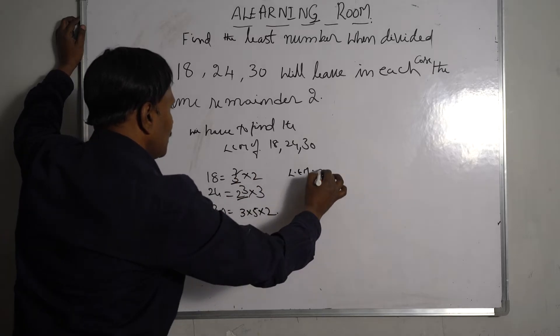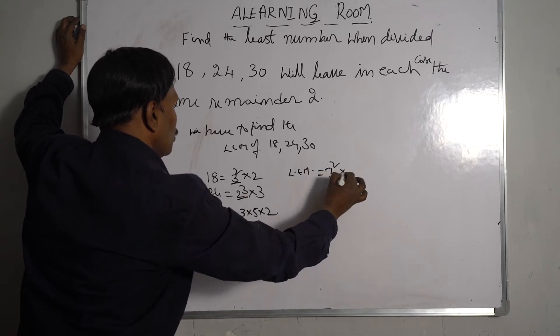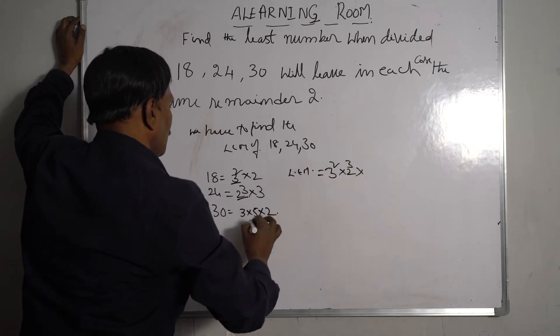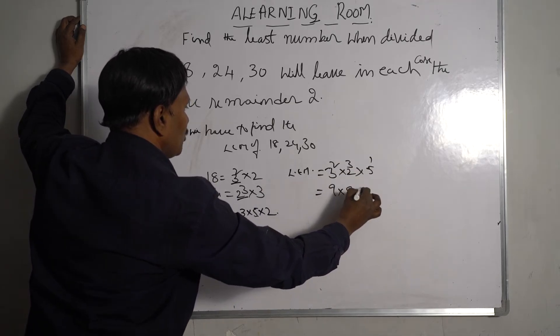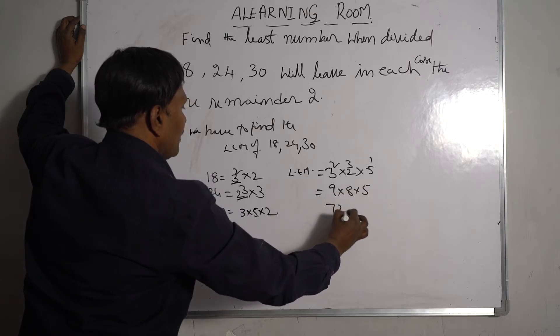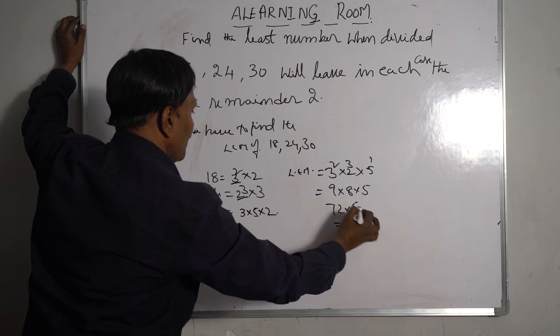So it means 9 into 8 into 5. This is 72 into 5, this is 360. So LCM is 360.